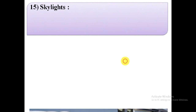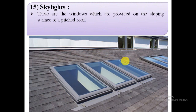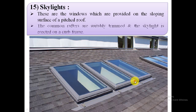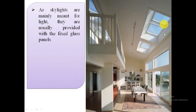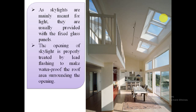The last type is skylights. Skylights are windows provided on the sloping surface of a pitched roof. The common rafters are suitably trimmed and the skylight is erected on a curb frame. As skylights are mainly meant for light, they are usually provided with fixed glass panels. The opening of the skylight is properly treated by lead flashing to make the roof area surrounding the opening watertight.